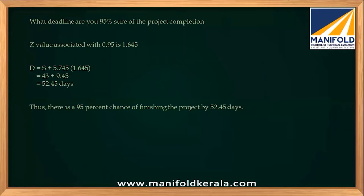In GATE exam questions, a straightforward Z-chart lookup may not appear often. However, reverse calculations can be expected — for example, given a 95% confidence level, what deadline are you 95% sure will be met? The Z value for 0.95 probability is given from the chart, and then you reverse-calculate D. Such questions may yield answers like D = 2.45 days, for instance.